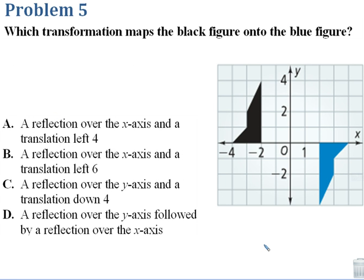And the last thing we looked at in our transformation chapter was compositions of transformations. We had our glide reflection where we translated and then reflected, or combinations of different numbers of reflections. Here we want to know which transformation maps the black figure onto the blue figure, and it looks like these are all compositions. We're going to need more than one to happen.